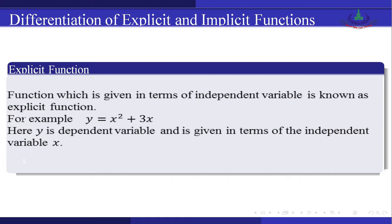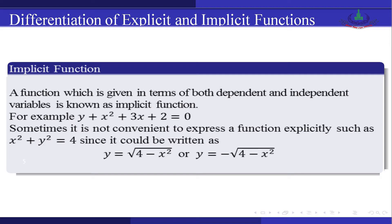A function which is given in terms of the independent variable is known as an explicit function. For example, y = x² + 3x, where y is the dependent variable and is given in terms of the independent variable x. Now we define implicit function: a function which is given in terms of both the dependent and independent variable is known as an implicit function. For example, y + x² + 3x + 2 = 0.